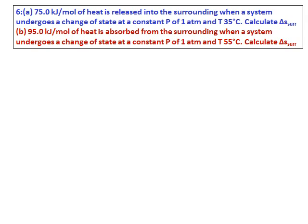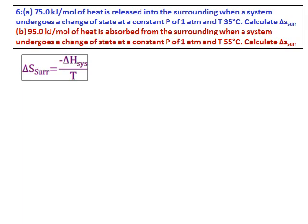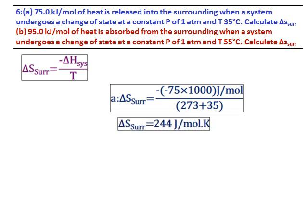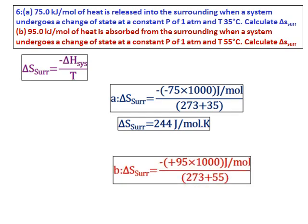75 kilojoules per mole of heat is released into the surrounding when a system undergoes a change of state at constant pressure and at 35 degrees Celsius. Calculate delta S of the surrounding. Part B: 95 kilojoules of heat is absorbed from the surrounding. Using delta S surrounding equals negative delta H system divided by T: in part A, since heat is released, delta H is negative, so delta S surrounding is positive 244 joules per mole·K. In part B, heat is absorbed so delta H is positive, giving a negative value for delta S surrounding.